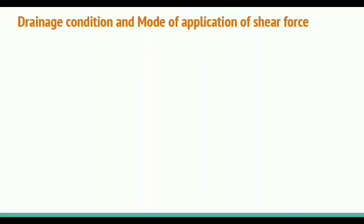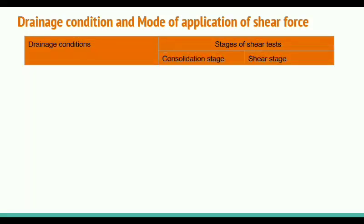In the next lecture, I will discuss various types of tests to measure the shear strength of soil. Before discussing the different types, we need to discuss drainage conditions and the mode of application of shear force. There are two stages used to perform a shear test: the first is the consolidation stage, where normal stress or confining pressure is applied to the specimen and it is allowed to consolidate — we give time for the specimen to fully consolidate so pore water pressure dissipates to zero.